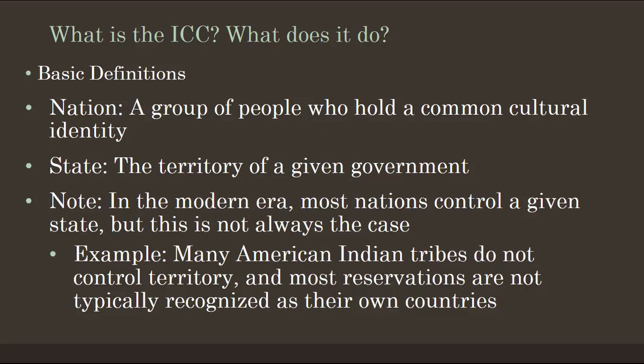In the modern era, most nations control their state, but this isn't always the case. The Palestinian people in the Middle East do not have a state officially recognized universally. Most Native American tribes do not have territories recognized outside of the US federal government. The Laplanders in Scandinavia and the Roma in Europe are examples of nations without states, though typically most nations do have states.